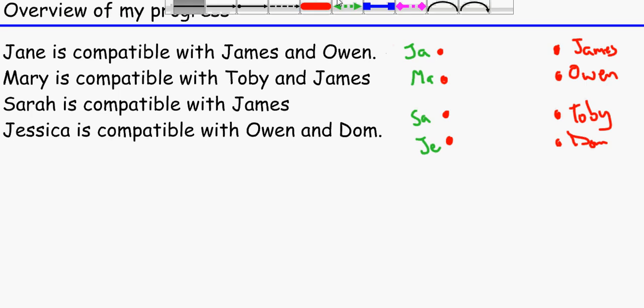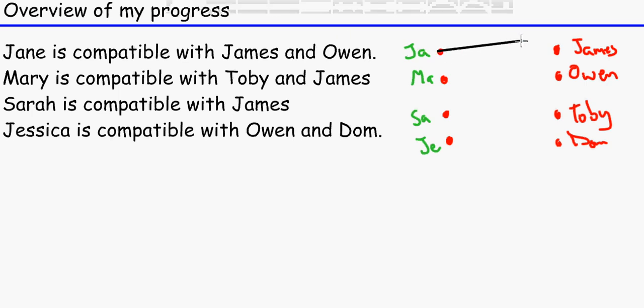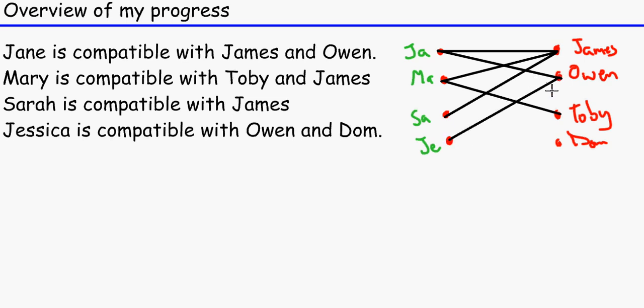And we will just draw that. So Jane is compatible with James and with Owen, Mary is compatible with Toby and James, Sarah is compatible with James - see James is very popular isn't he? - and Jessica is compatible with Owen and Dom. Okay, and that is our bipartite graph done.